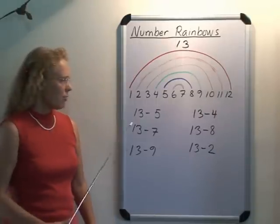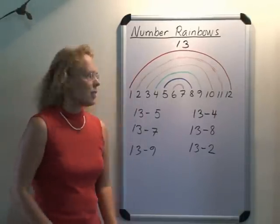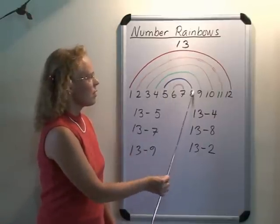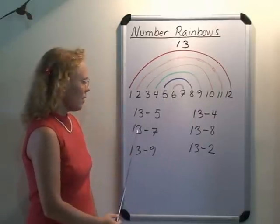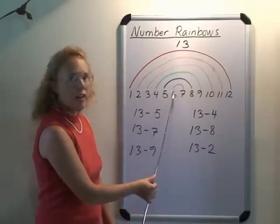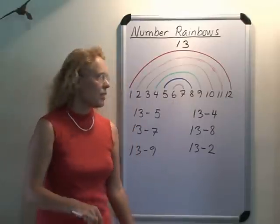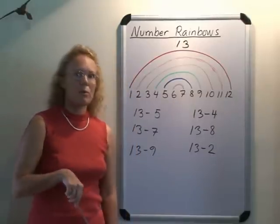So thirteen minus five, the child can look at five and go with the arc, oh, it's eight, that's the answer. Thirteen minus seven, go to seven, follow the arc, six is the answer. And practice like that for a while. It helps them see a structure in it, and helps them also memorize it.